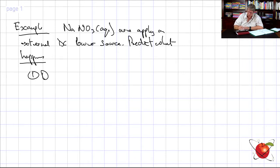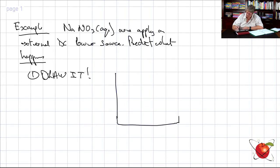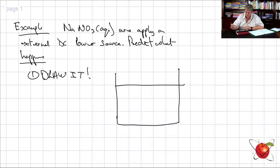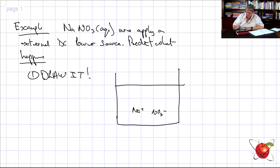Step one: draw it. Draw a big pot — give yourself space, paper is cheap. In the pot we have Na+ and NO3- ions. Here are the electrodes.